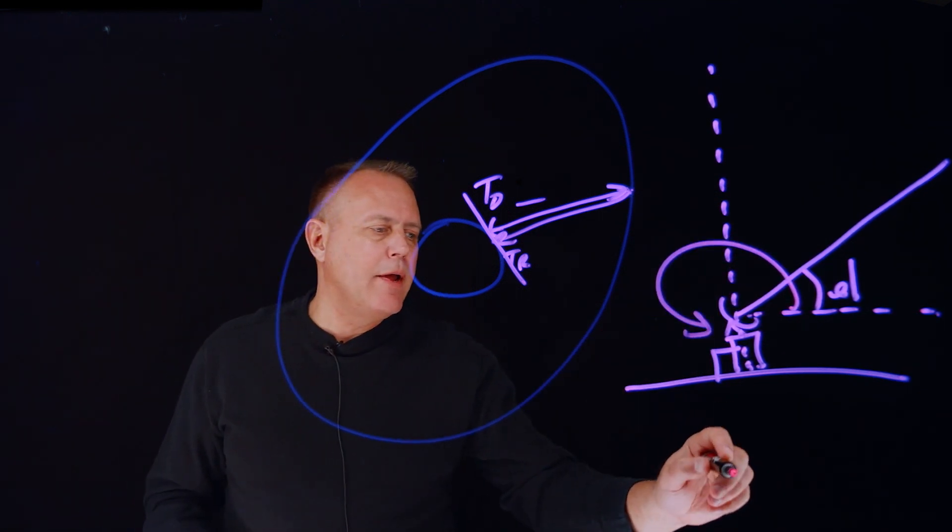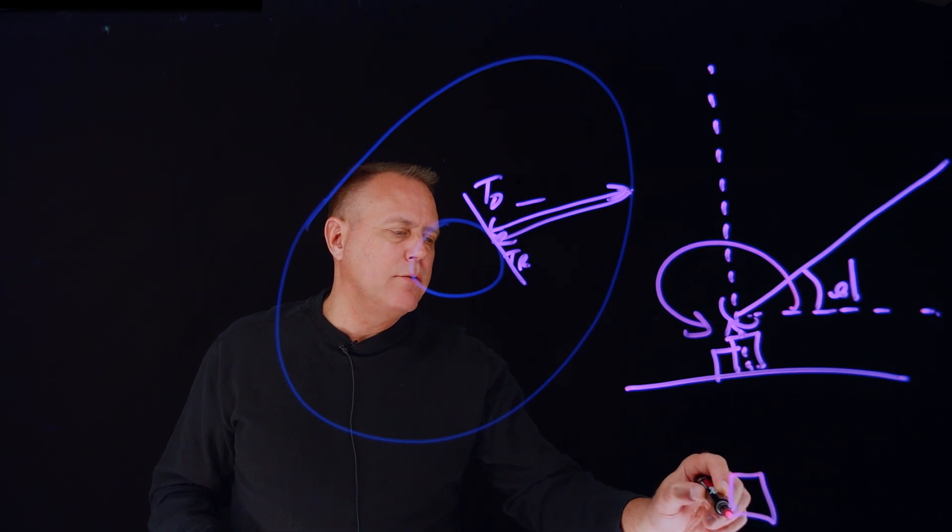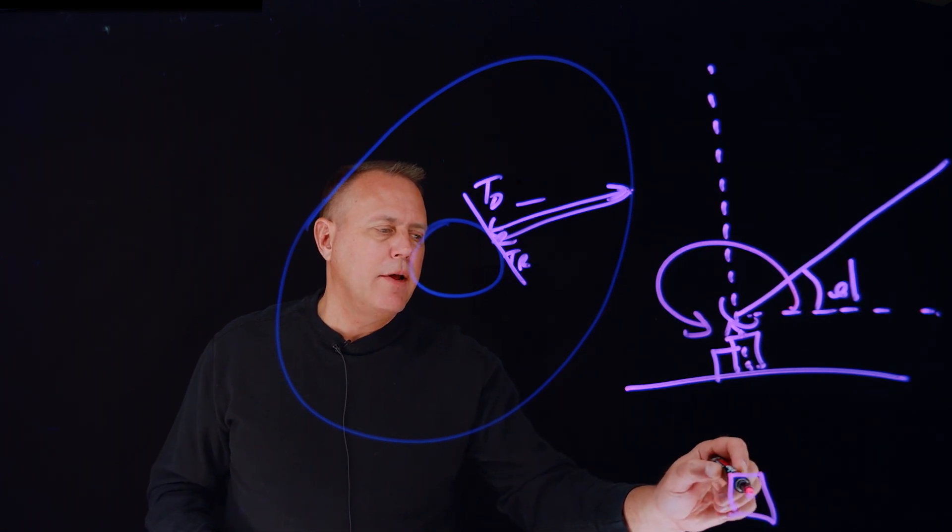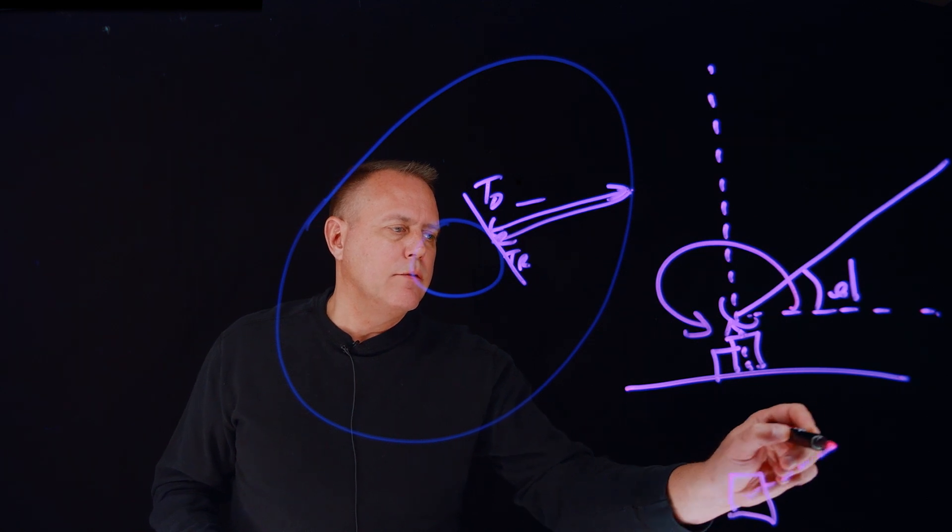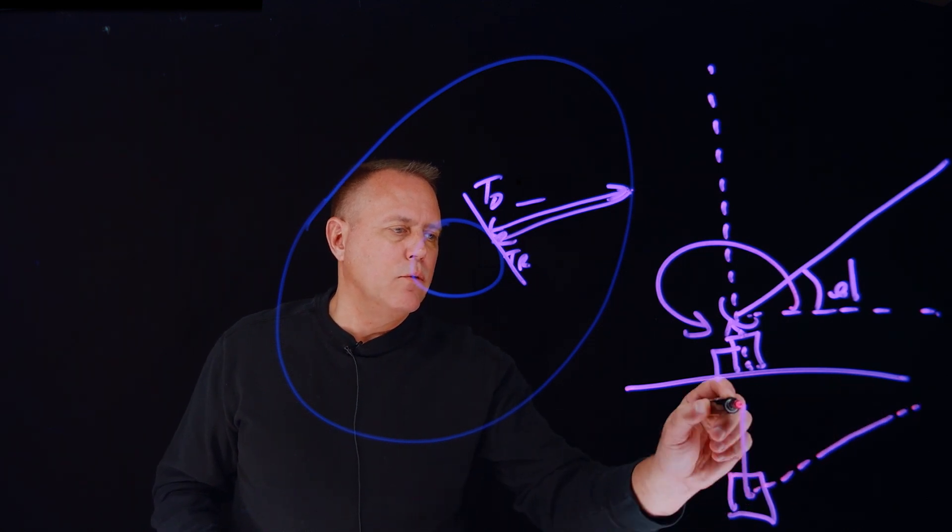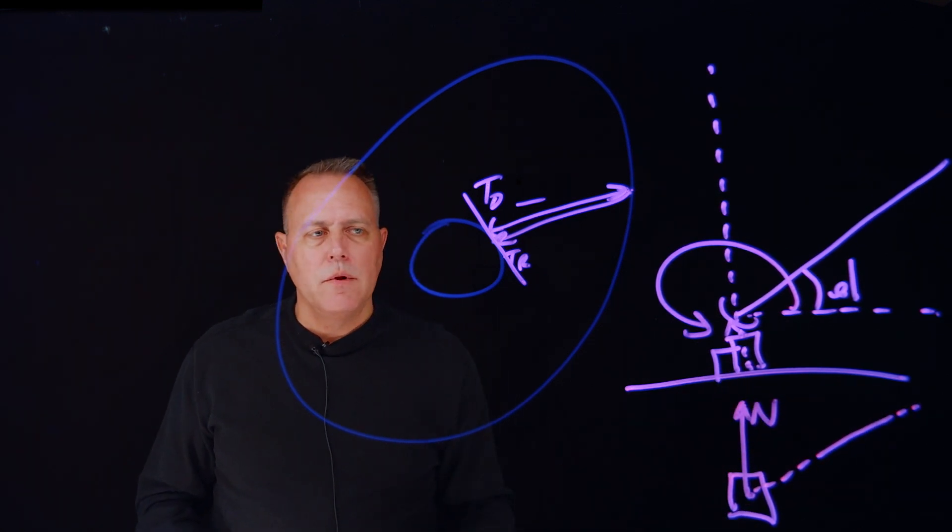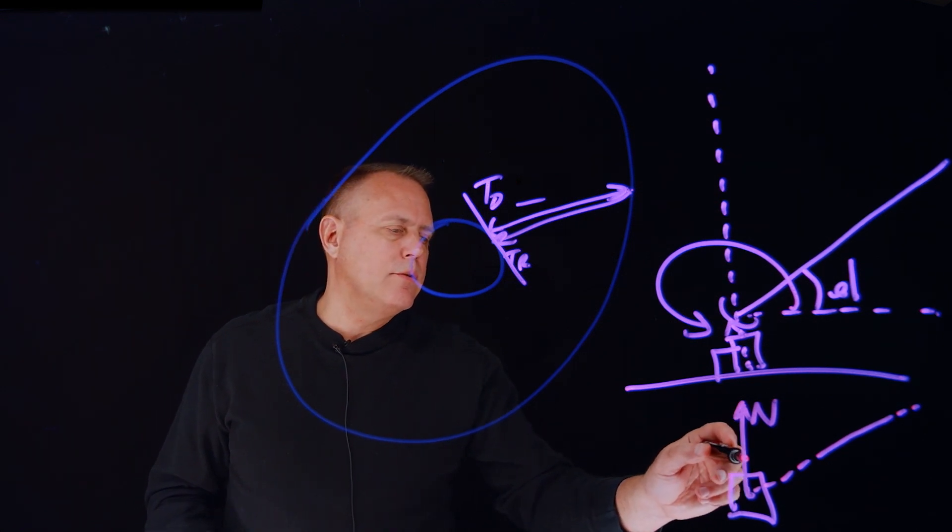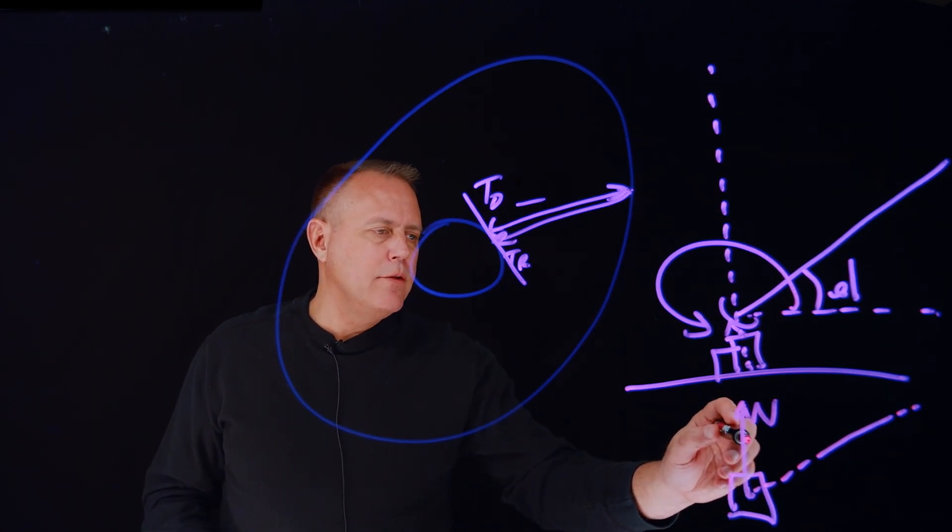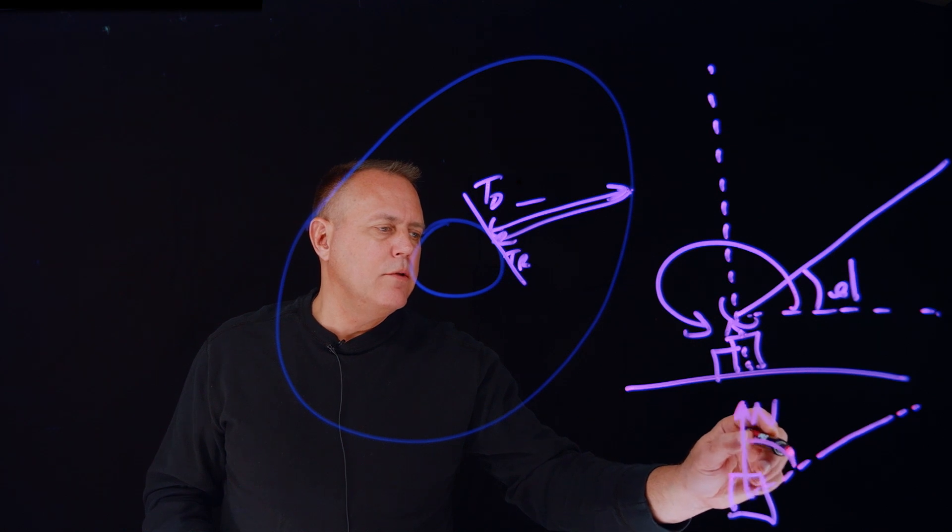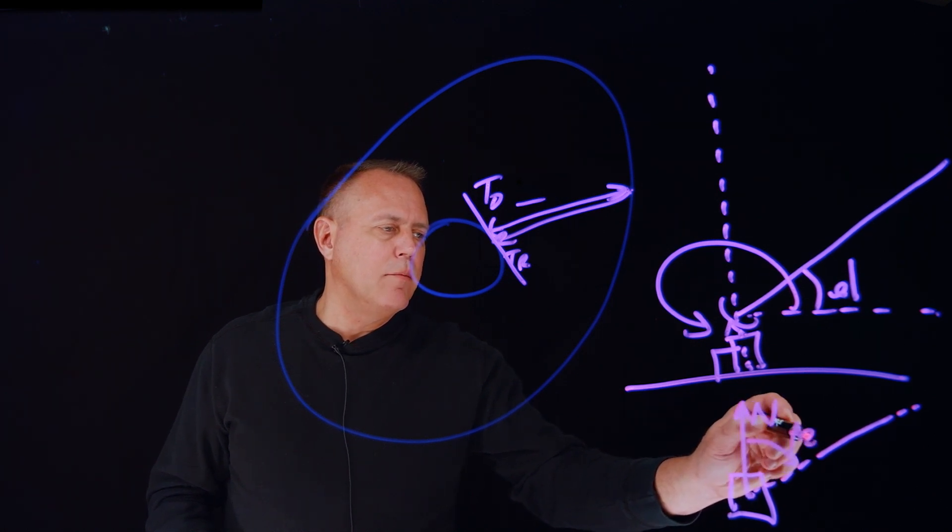So if I'm looking down at my site, here's my site, I'm looking down on it, and I've got a dish on it, and my satellite is over in this direction, and this is the North Pole, then the azimuth is typically measured as the angle from North to the direction that I'm looking.